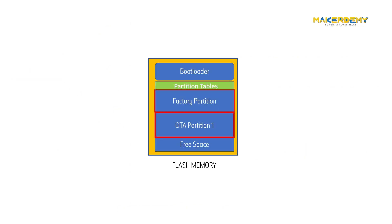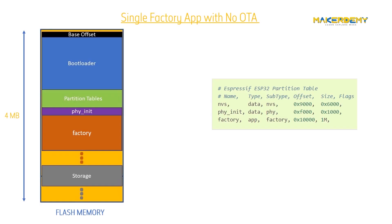To implement OTA update without failure, we need a minimum of two OTA partitions in the flash memory as discussed earlier in this video. By default, the ESP32 uses a single factory app with no OTA partition table. You can see the details of this partition table here.